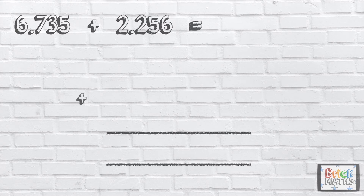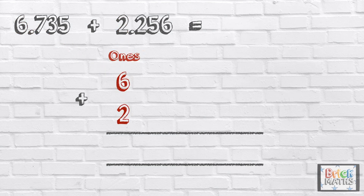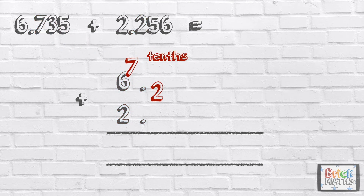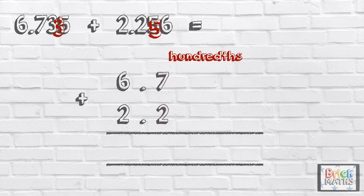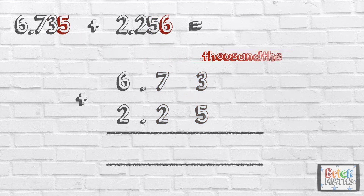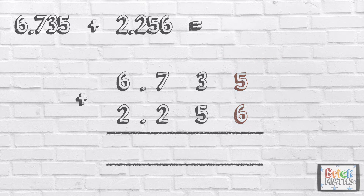Here is another calculation: six point seven three five add two point two five six. First we need to line the numbers up correctly. Now that our columns are set out correctly we can add the digits.